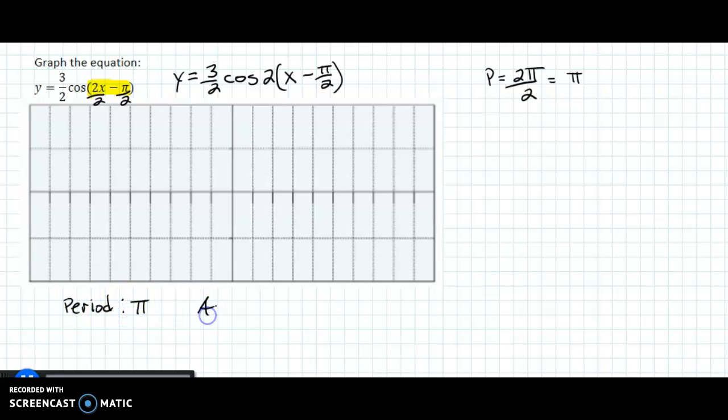And my amplitude is 3/2, so that's 1.5. And then this value here is a phase shift. It's going to move left or right, and we do the opposite sign. So this is going to move right π/2.